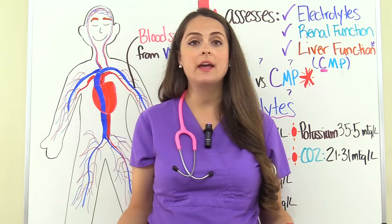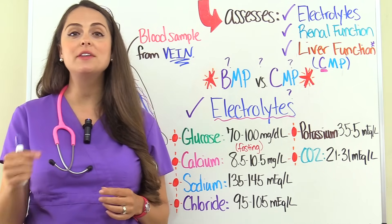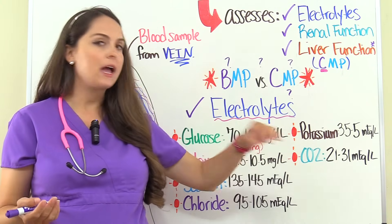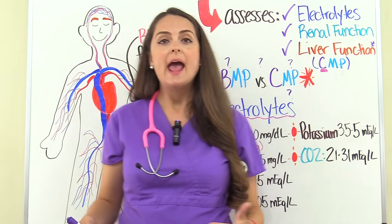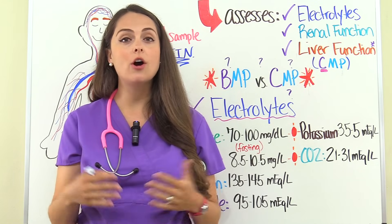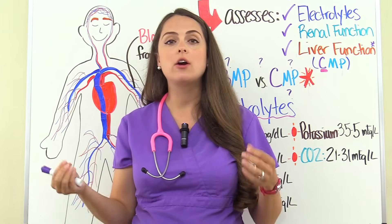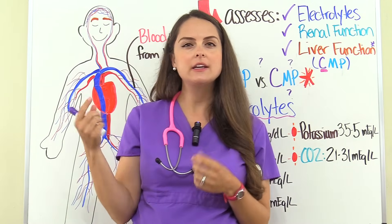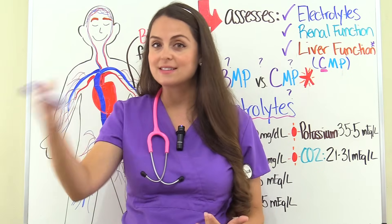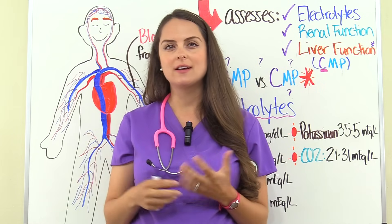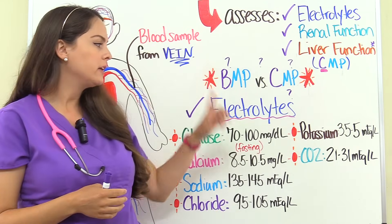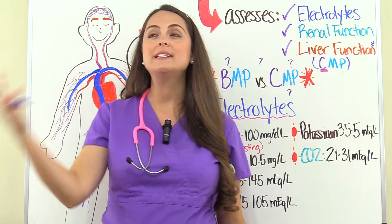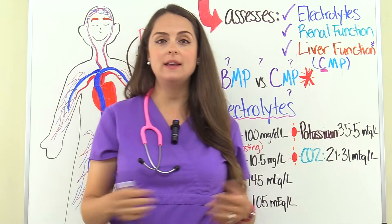The last electrolyte in the metabolic panel is carbon dioxide. A normal carbon dioxide level in the blood is about 21 to 31 milliequivalents per liter. Carbon dioxide plays a huge role in the acid-base balance of the body and is a waste product from metabolism. Much of the carbon dioxide in your blood is in the form of bicarbonate. So if we have a low carbon dioxide level, our blood is really acidic — causes include diabetic ketoacidosis or aspirin toxicity. What can increase it? Patients with respiratory issues who retain carbon dioxide, like those with COPD.